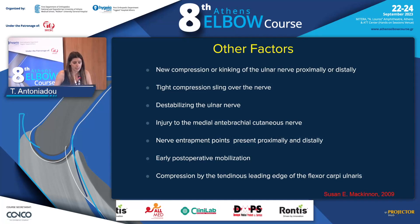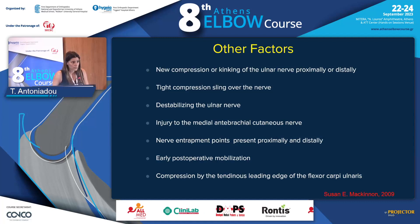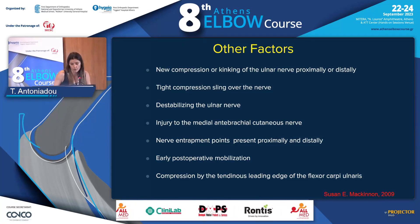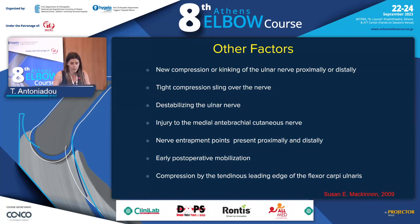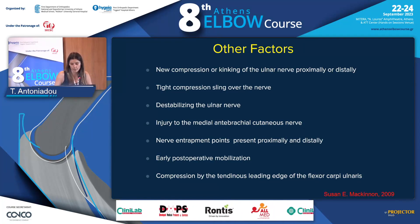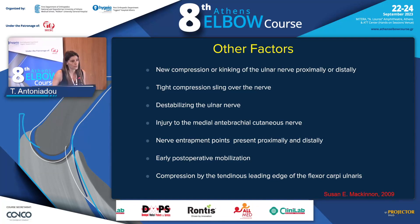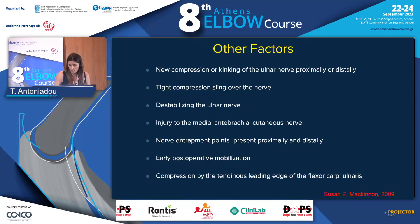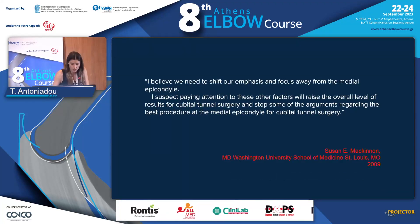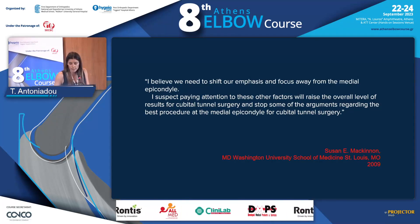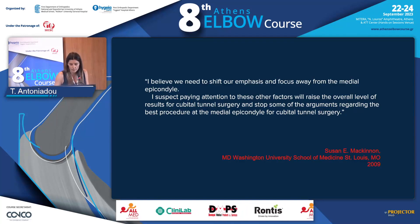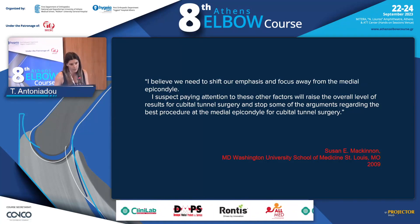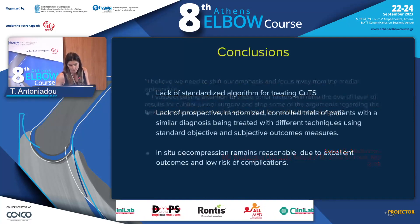Before closing, we have to highlight other factors important for outcome: new compression or kinking of the ulnar nerve proximally or distally, tight compression sling over the nerve, destabilization, injury to the medial antebrachial cutaneous nerve, release of nerve entrapments at all compression sites, early postoperative mobilization, and compression by the fascia of the FCU. These factors were highlighted by Susan McKinnon in 2009, who believed we should focus away from the medial epicondyle and the placement of the ulnar nerve, and that attention to these factors would improve surgical outcomes and resolve the debate over which technique is better.